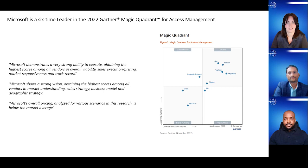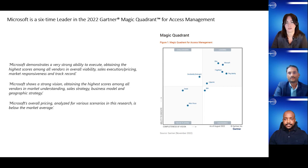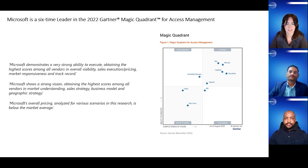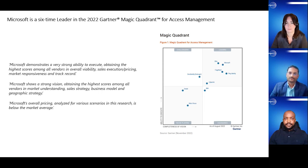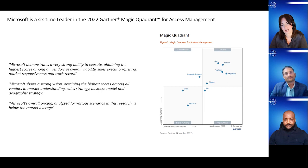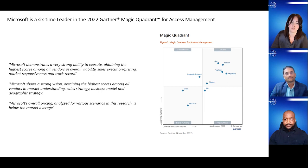Microsoft Entra was a rebranding of our IAM solutions because it paves the way for the next generation of identity solutions that can help any organization protect access to all applications and resources for all users — effectively securing every identity, including employees, customers, partners, applications, and devices across all environments. This includes the ability to discover and right-size permissions, manage access life cycles, ensure least privilege access, and keep users productive with simple sign-in experiences, intelligent security, and unified administration.